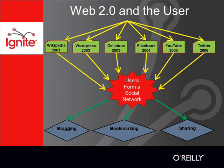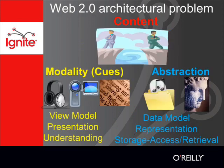Tim O'Reilly cleverly looked at the evolution of the Internet from a different perspective. Web 2 includes social networking sites, blogs, and media sharing. It offers rich user experience and participation, dynamic content, and collaborative authoring. But Web 2 covers the same architectural problem as its predecessor: there is a gap between the presentation of information to the user and the representation of information for machines.